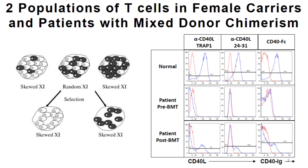We do it by this flow cytometry test where we take the cells, and we don't stimulate them here in red, or we stimulate them here in blue. We're using an antibody that detects CD40 ligand. We put that on the surface of the cells, and if the CD40 ligand protein is there, then the cells become bright and shift over. So in a normal individual, unstimulated T cells versus stimulated T cells — once they get stimulated, they express CD40 ligand and it shifts over. This is a measure of how much is expressed.